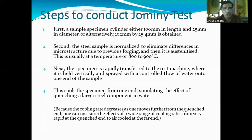To conduct the Jomini test: the specimen is a cylinder of 100 mm length and 25 mm diameter (alternatively 102 mm × 25.4 mm). The steel sample is first normalized to eliminate differences in microstructure due to previous forging, and then it is austenitized — heated in the furnace to a temperature of 800 to 900°C.